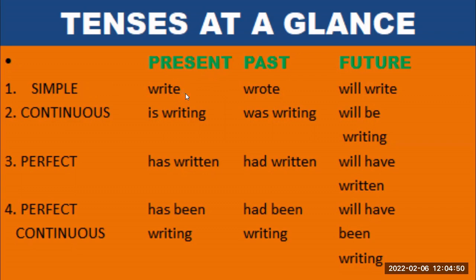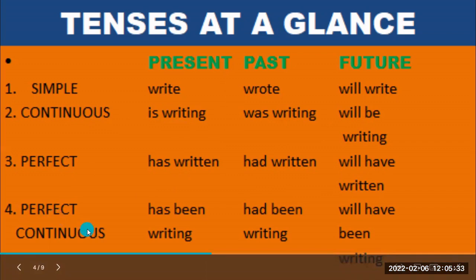The simple present is 'writes,' the simple past is 'wrote,' and the simple future is 'will write.' The present continuous is 'is writing,' past continuous is 'was writing,' future continuous is 'will be writing.' The present perfect is 'has written,' past perfect is 'had written,' future perfect is 'will have written.' Then the present perfect continuous is 'has been writing,' past perfect continuous is 'had been writing,' and future perfect continuous is 'will have been writing.'